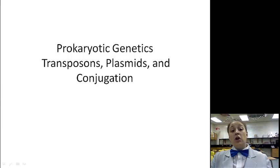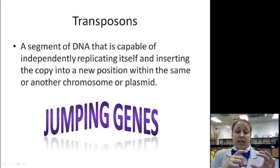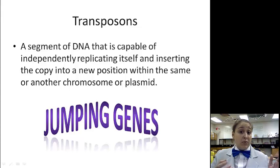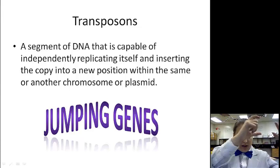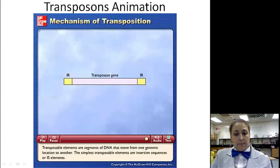Hello ladies and gentlemen. We're going to be talking about transposons, plasmids, and conjugation today. So what is a transposon? It is a section of DNA that can replicate itself and insert itself into a new position in the same or another chromosome or plasmid. They're called jumping genes because the gene can actually take itself out and jump to another place. Let's take a look at them.